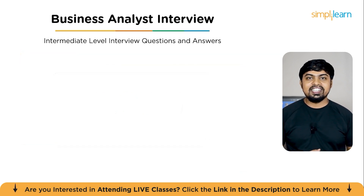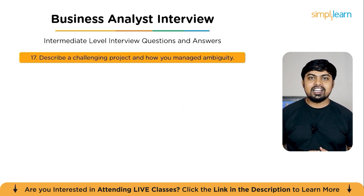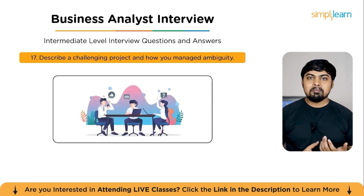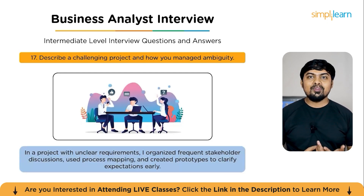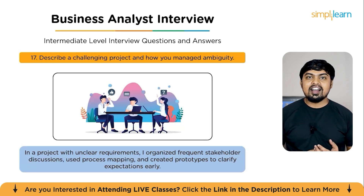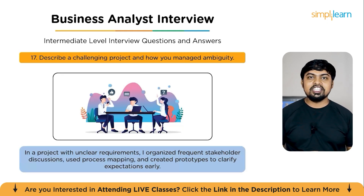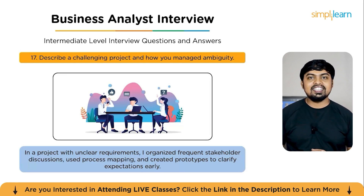Question 17: Describe a challenging project and how you managed ambiguity. Remember a situation where you faced this personally. For example, in one project, requirements were unclear due to evolving client expectations. To manage this, I conducted frequent brainstorming sessions and iterative prototyping to visualize ideas quickly. I maintained a living document to track changes and sought early validation after each iteration. This approach minimized rework and ensured continuous alignment between stakeholders and the technical team.